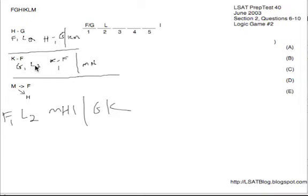Then we also know that if M is in, F and H also have to be in. Choice C and D both mention M, yet choice C has M but not H. So C is gone, leaving D by elimination for number six.